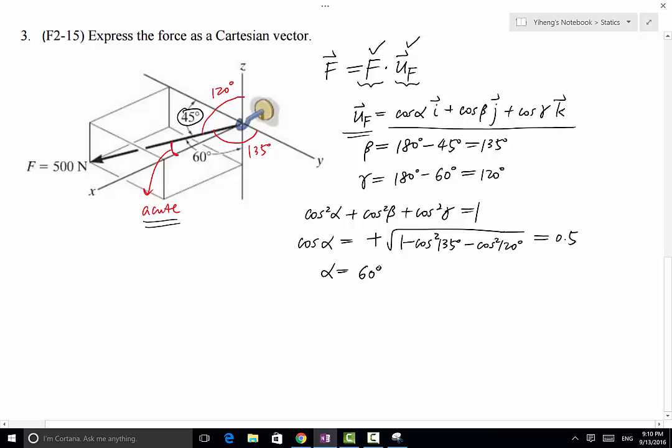So after we determine that, we can substitute cosine alpha, cosine beta, and cosine gamma into this equation to find uf. Therefore uf equals cosine alpha, that's 0.5 i, cosine beta, which is cosine 135 degrees, is negative square root of 2 over 2, so that is about negative 0.707 j, and then cosine 120 degrees is negative 0.5 k. So that's the unit vector.